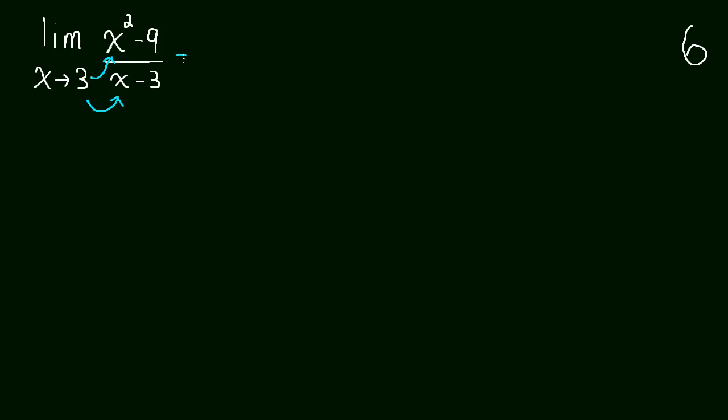If we do that though, what happens is we get 0 over 0, which is undefined. And this is called, when we're talking about limits, an indeterminate form, meaning we can't determine the answer.